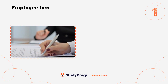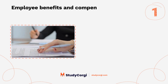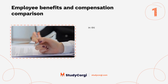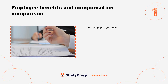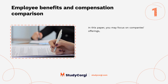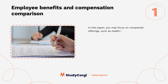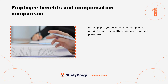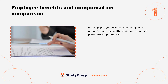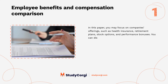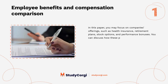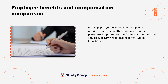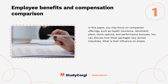Employee benefits and compensation comparison. In this paper, you may focus on companies' offerings such as health insurance, retirement plans, stock options, and performance bonuses. You can discuss how these packages vary across industries and what their influence is on employee job satisfaction and retention.